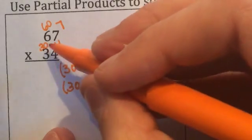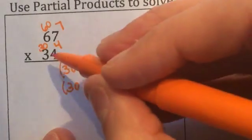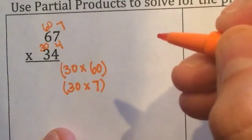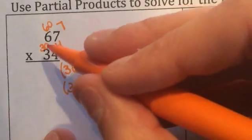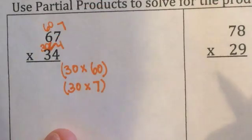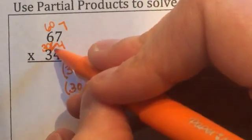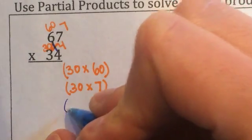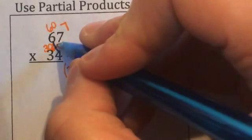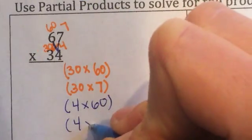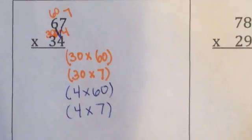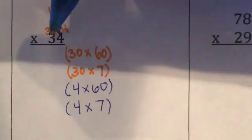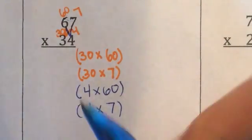Why don't I group 30 with 4 and say 30 times 4? Because 30 already goes with 4 — they're already grouped together and made 34. That's 30 plus 4, not 30 times 4. So I did 30 times 60 and 30 times 7. Now I go to 4: I need to do 4 with 60 — not just 6, but 60 — and 4 times 7. This is just another way to group our numbers. Everything on the top gets multiplied by everything on the bottom.